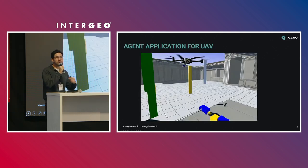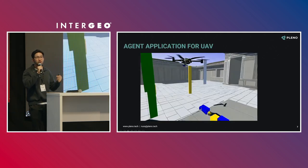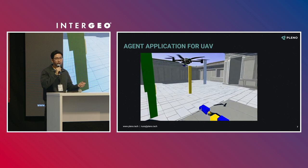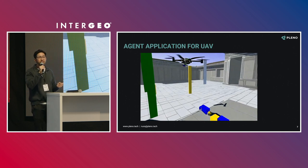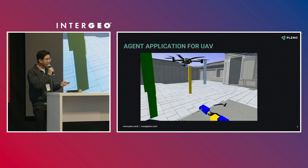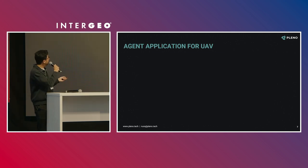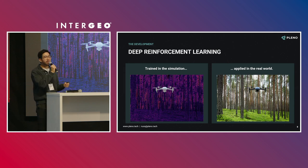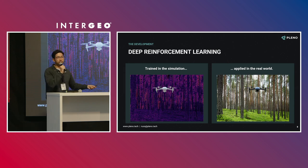We are using simulations to train a UAV to do many things like obstacle avoidance, detecting objects, but also delivering goods, doing landings, and many different things that might not be safe or practical to do in the real world. Based on the simulation training, we then apply it to the real world.